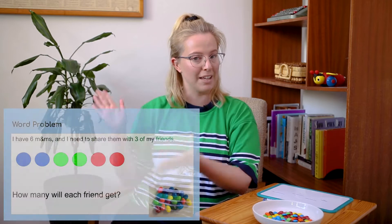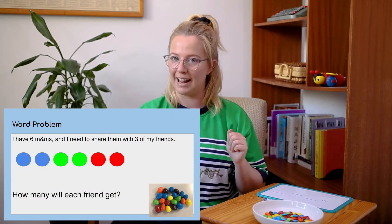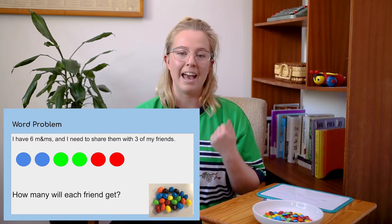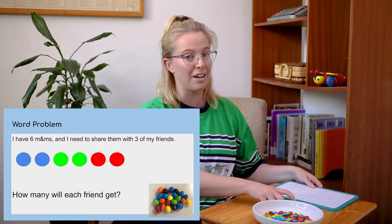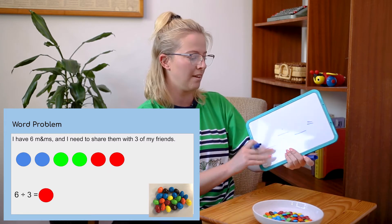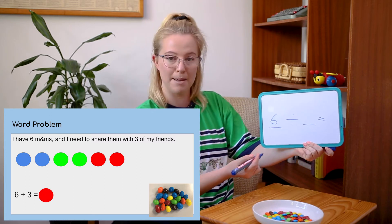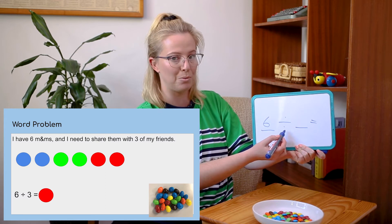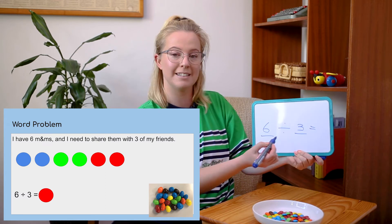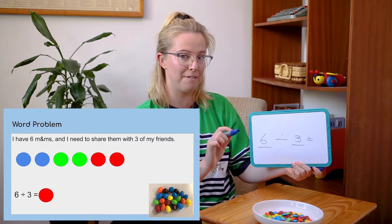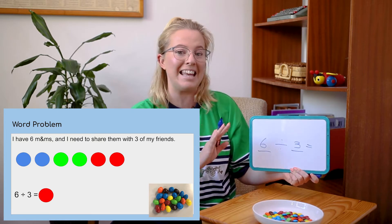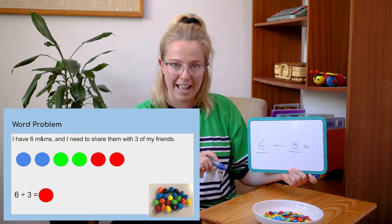Let's have a look at the word problem and see if we can figure it out by dividing or sharing the M&Ms into groups. Here's the word problem: I have six M&Ms and I need to share them evenly with three friends. On the equation that looks like: six M&Ms divided or shared between three friends, and the equals is asking how many M&Ms will each friend have. A keyword there was 'evenly,' which means they all have to have the same amount.